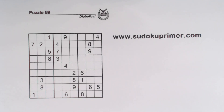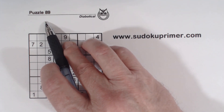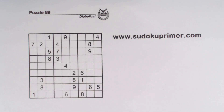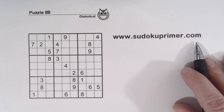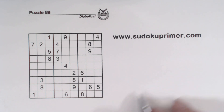Welcome to the Sudoku Primer channel where we solve Sudoku without using candidates. This is puzzle number 89 from Sudoku to Go volume 153, and we're going to talk about twins and how they fit in containers today. You can print this puzzle to follow along by clicking the link in the description below, or go to sudokuprimer.com and go to the menu item 'Print YouTube Puzzles' before you watch, and you can write in the numbers as we go along.